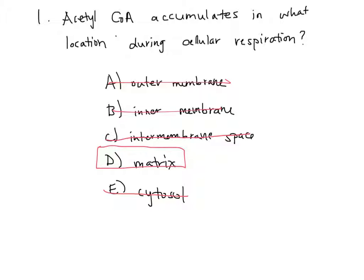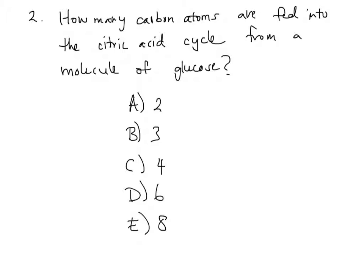All right. Let's move to the next question. How many carbon atoms are fed into the citric acid cycle from a molecule of glucose? A, 2, B, 3, C, 4, D, 6, or E, 8? Take a moment to think about this question.